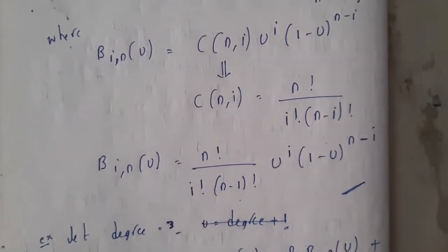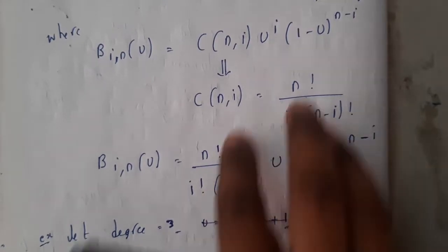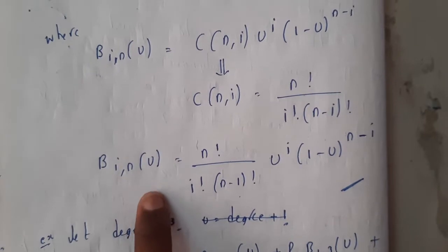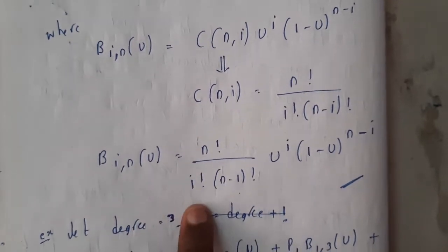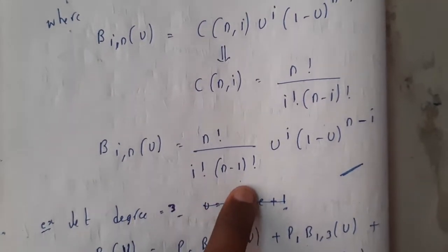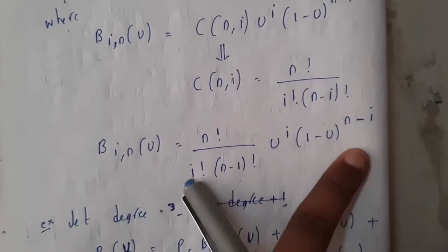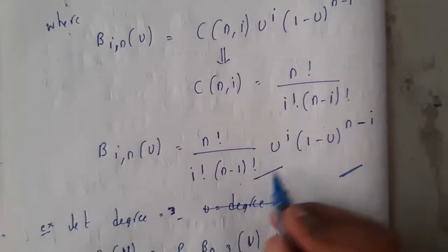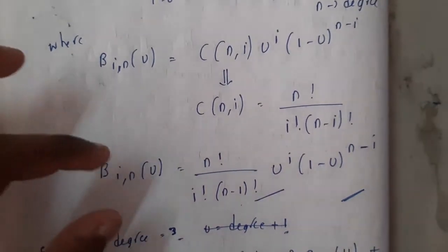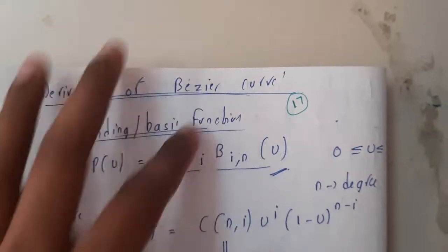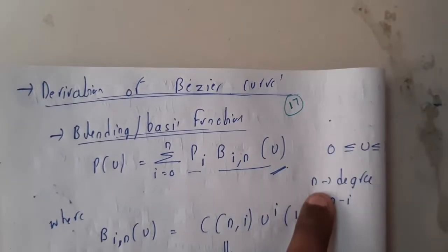So if you substitute these in this, you'll be getting B_{i,n}(u) equals n factorial by i factorial into n minus i factorial into u to the power i into (1-u) to the power n minus i. So this is the main formula. Basically you'll be substituting values in this, and according to the degree, you'll be substituting the values and finding the results.